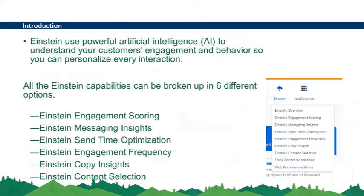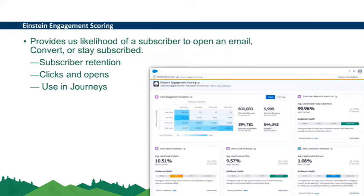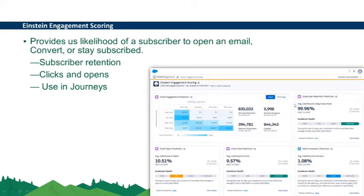The first studio is Einstein Engagement Scoring. It provides the likelihood of a subscriber to open an email, convert into a customer, or stay subscribed to your communications. This feature provides insights on subscriber retention — how likely someone is to remain subscribed — and also on opens and clicks. This feature can also be used in Journeys when you create customer journeys.